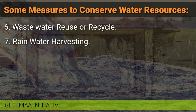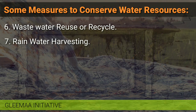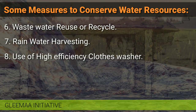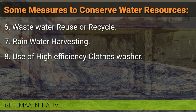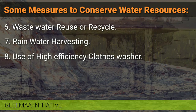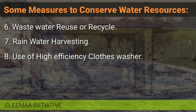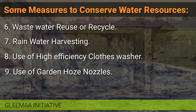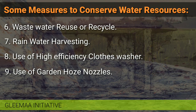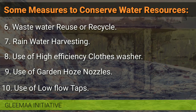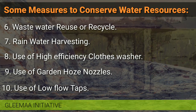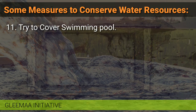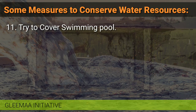Number 7: Rainwater harvesting, by which we can store rain water in a tank or even a pot and reuse it wisely in many ways. Number 8: Use high-efficiency clothes washers, as they use water very efficiently and the amount is controlled automatically as necessary. Number 9: Use garden hose nozzles that shut off water when not in use, instead of letting a hose run. Number 10: Use low-flow taps in wash basins where the flow of water is low, reducing water runoff. Number 11: Try to cover swimming pools when not in use — this will reduce evaporation.